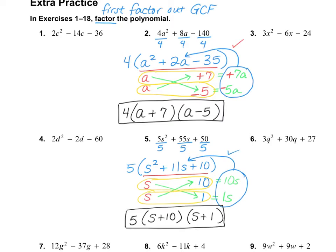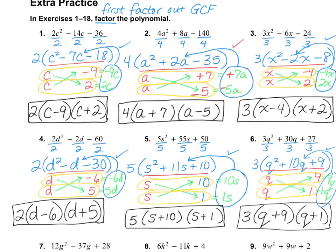I would like for you to do the rest of these four problems on your own: numbers 1, 3, 4, and 6. First factor out the GCF, and then see if you can finish factoring like we did in Section 7.5. Now please check your answers. As a reminder from the Section 7.5 video, you can flip-flop the parentheses — for example, on number 1, I could write it as 2 times (c plus 2) times (c minus 9). If your parentheses are in a different order, that's completely fine as long as each parenthesis is correct.